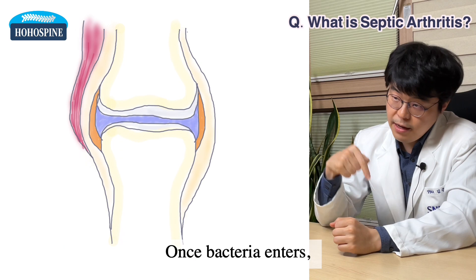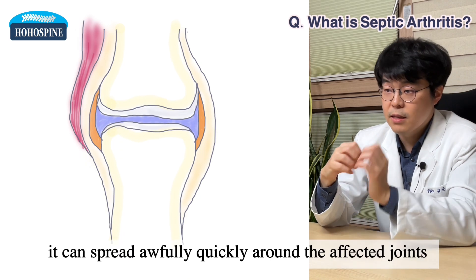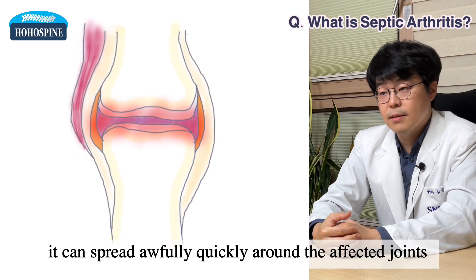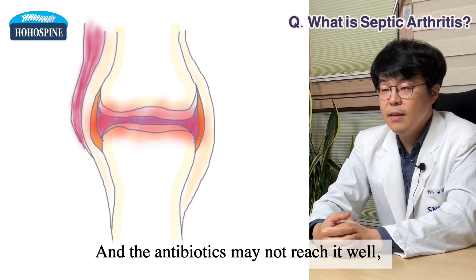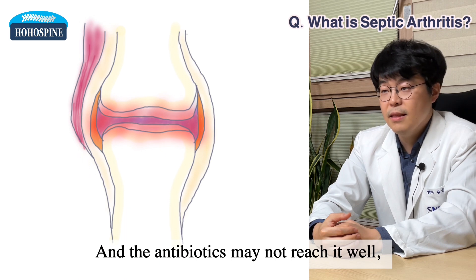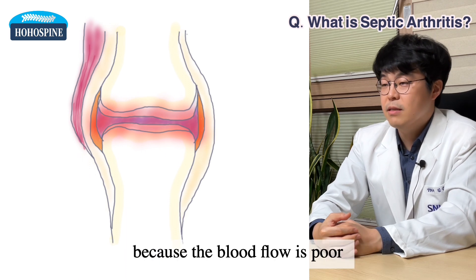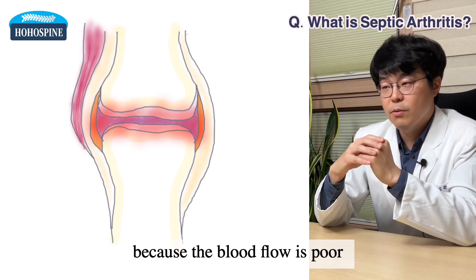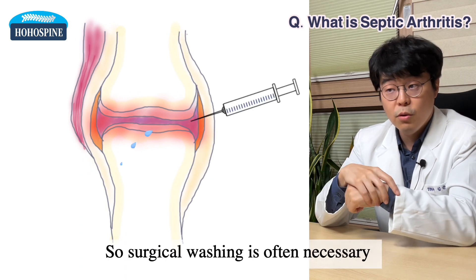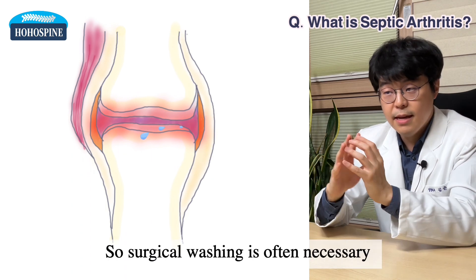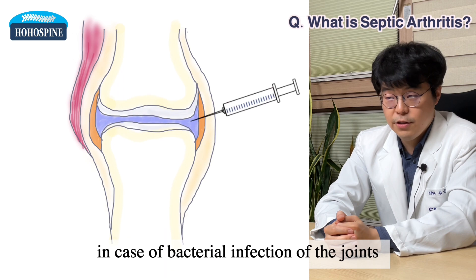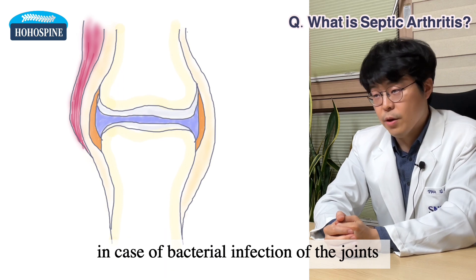Once bacteria enters, it can spread awfully quickly around the affected joints. And antibiotics may not reach it well because blood flow is poor. So surgical washing is often necessary in case of bacterial infection of the joints.